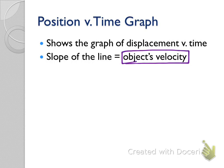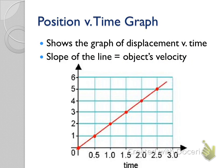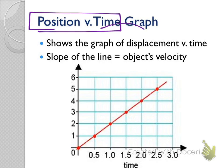Highlight or circle that part on your handout, because that's really important. The slope of a position versus time graph tells us velocity. That's something we have to be able to calculate.